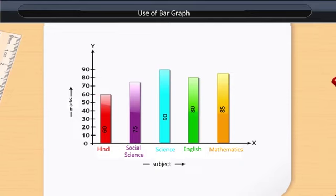We use a scale of 0 to 10, 10 to 20, etc. on the y-axis. Marks between 0 to 10 are called the first unit. Here, we use 1 unit for 10 marks.